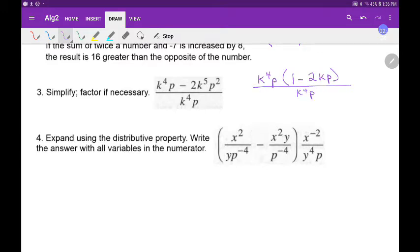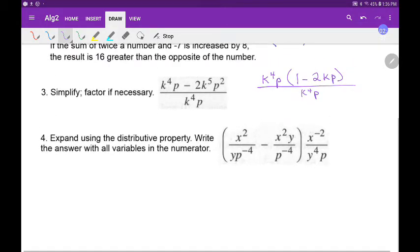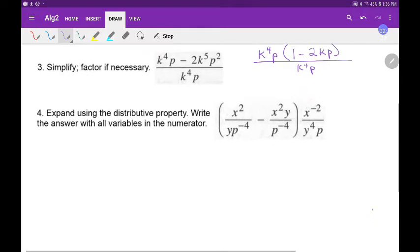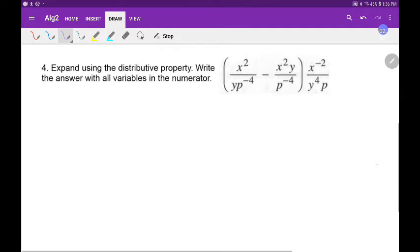Okay, so expand using the distributive property. Write the answer with all variables in the numerator. Okay, so just because it's over on the right side doesn't mean I don't still do what I do. I just do it from the right. So x squared and x to the minus 2, that's 0. I'm adding exponents. And then I have y to the fourth and y to the 1, so that's y to the fifth.